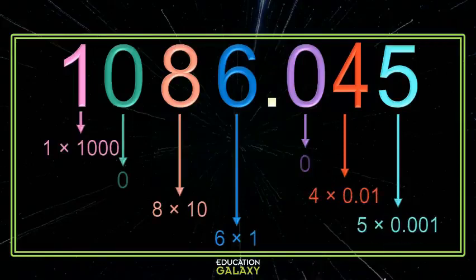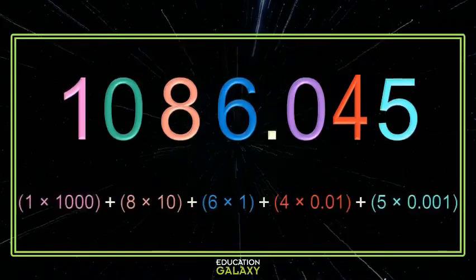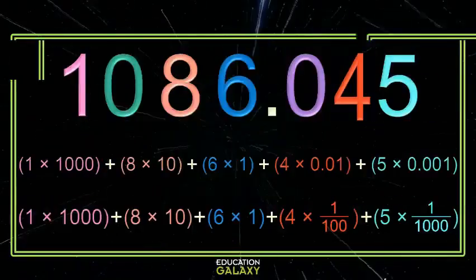So now we just write this as a sum, and there's your number — all expanded. It's beautiful. Now some of you might also see the decimal portions as fractions. Don't let that throw you off. You know that a hundredth is one hundredth and that a thousandth is one thousandth. No big deal.